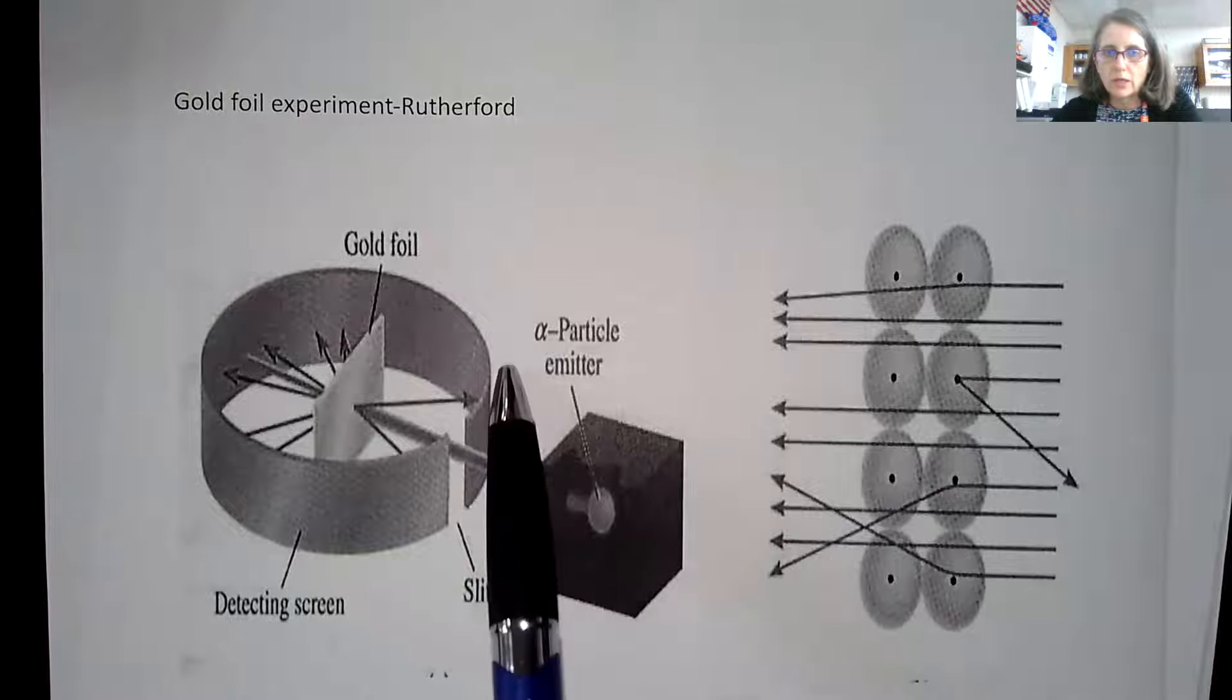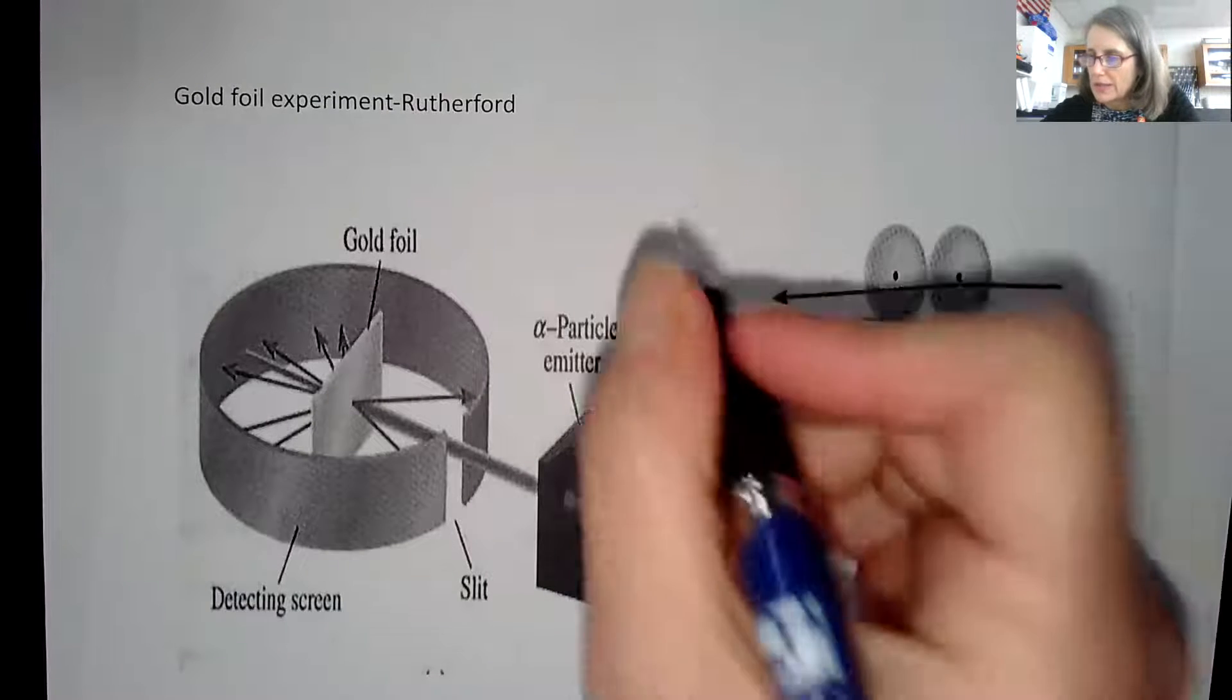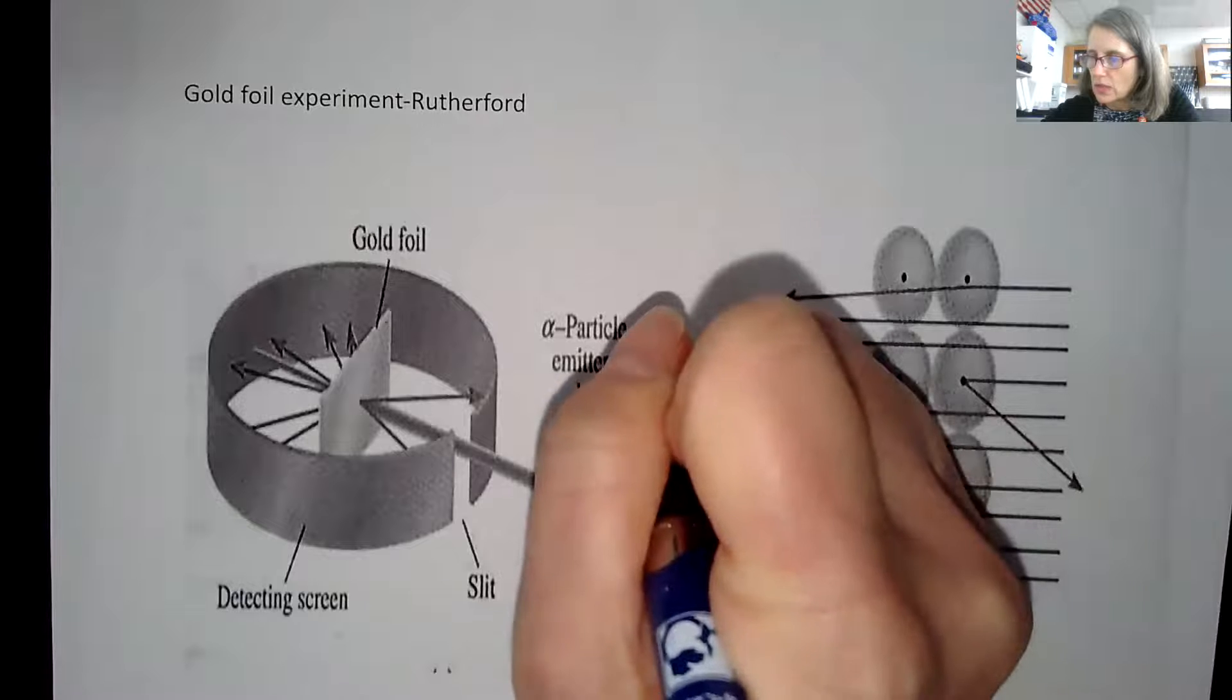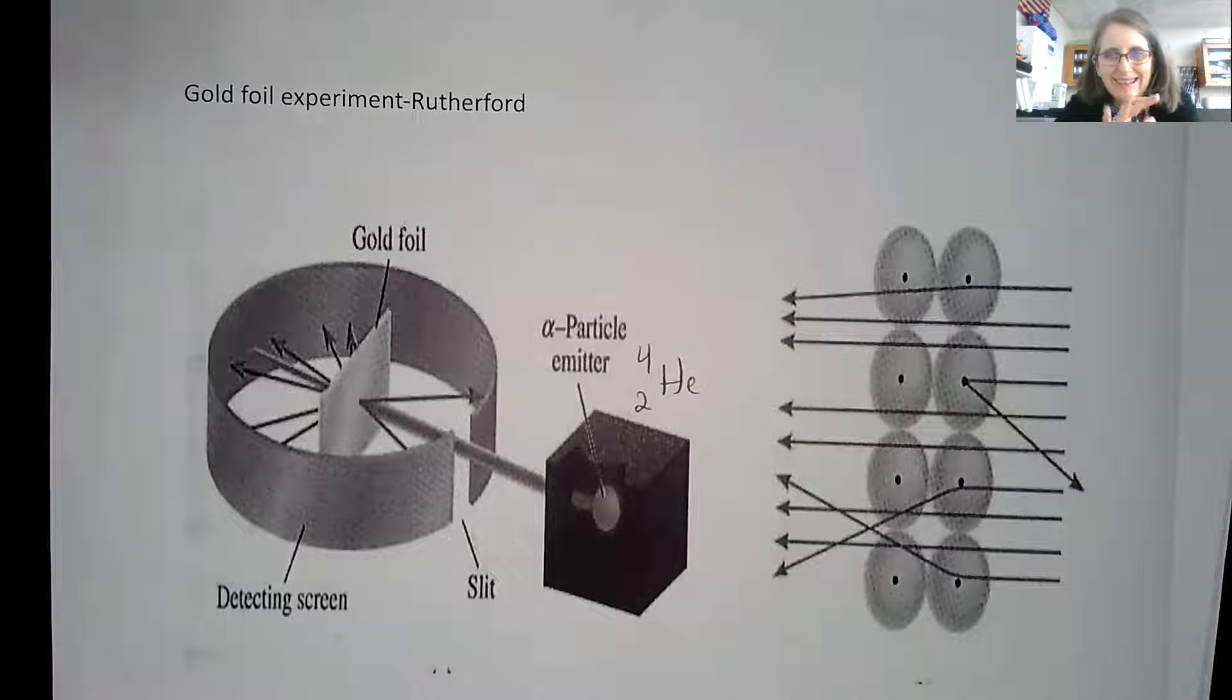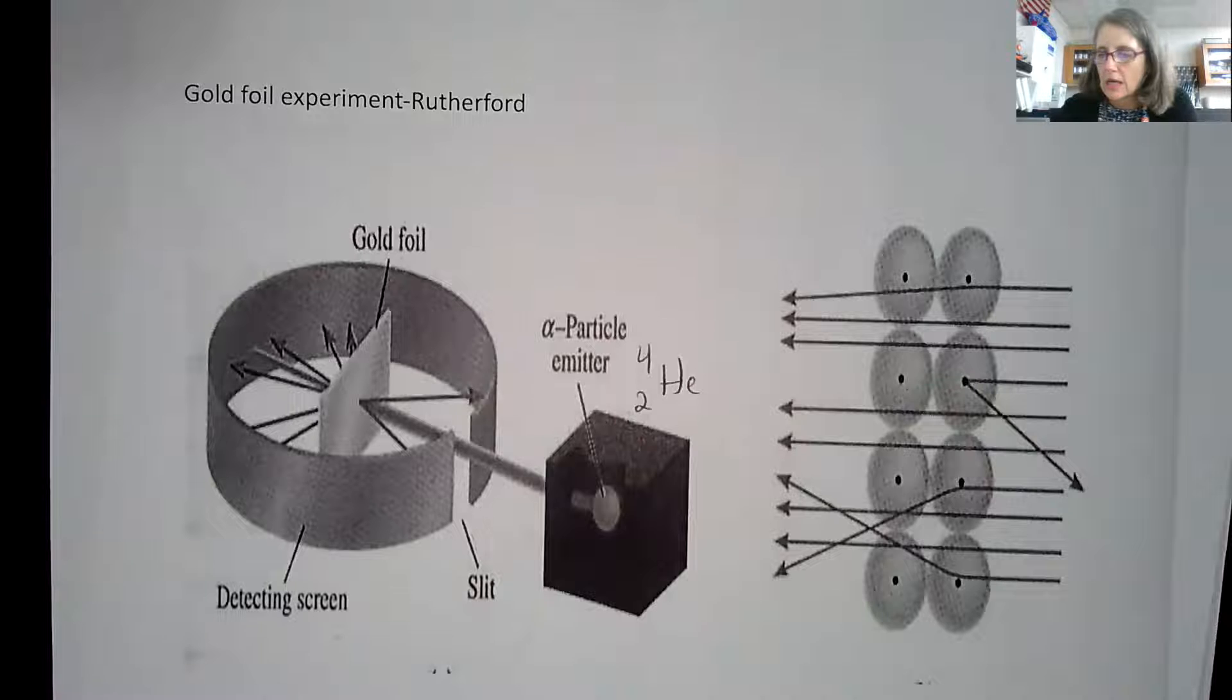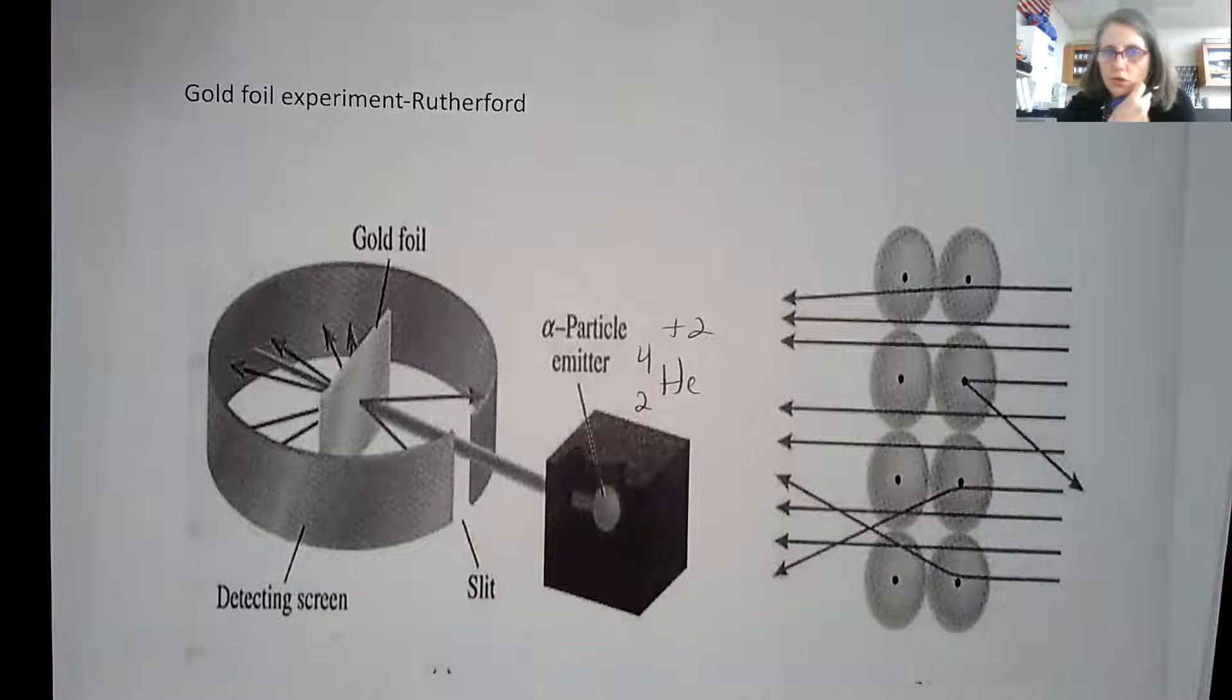What Rutherford had was what we call an alpha particle. All you need to know is essentially it was two protons and two neutrons, so essentially it was helium without the electrons. It has a positive two charge.